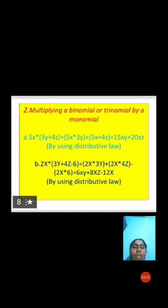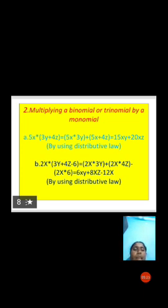Second example: 2x × (3y + 4z − 6). Here 2x is a monomial and (3y + 4z − 6) is a trinomial. By the distributive law: 2x × 3y + 2x × 4z − 2x × 6. Now 2x × 3y = 6xy, 2x × 4z = 8xz, and 2x × 6 = 12x. Therefore, 2x × (3y + 4z − 6) = 6xy + 8xz − 12x.